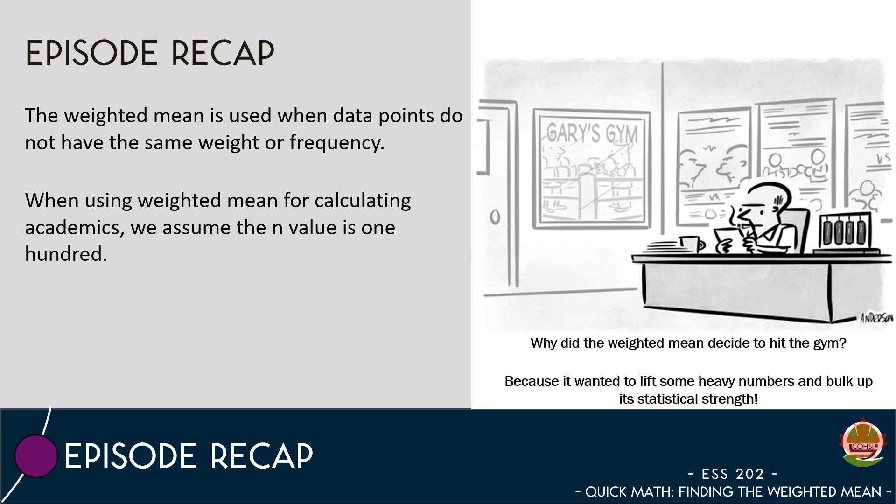When using weighted mean for calculating academics, we assume the N value is 100. When calculating other N values, we need to combine our datasets together before making the calculation.